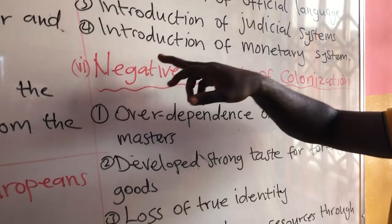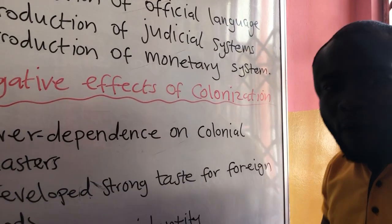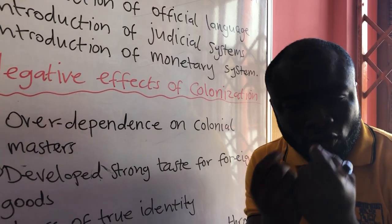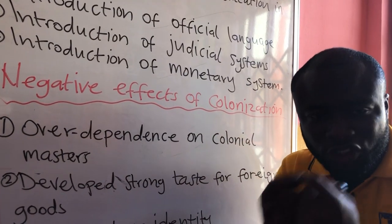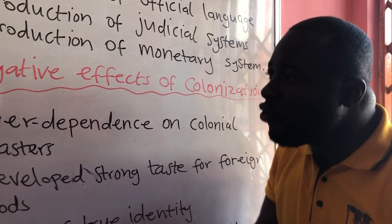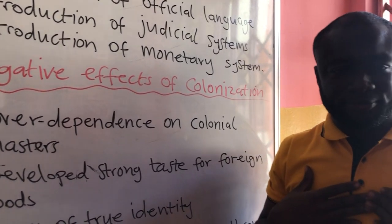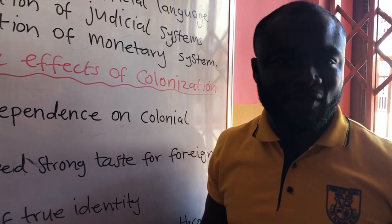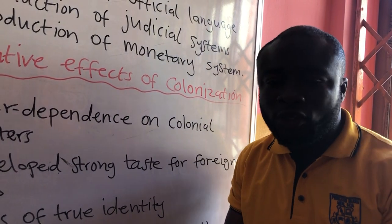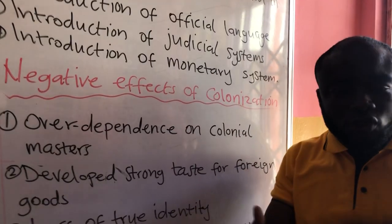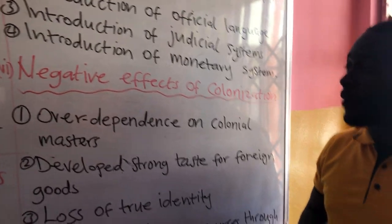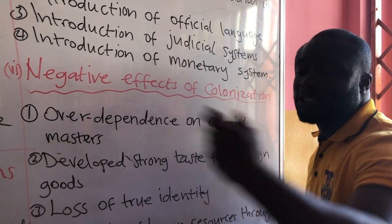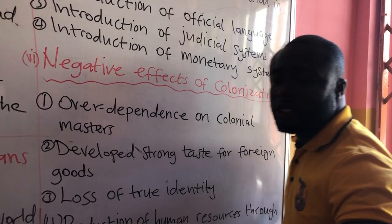The fourth positive effect was the introduction of the monetary system. Our people at that time had no knowledge about money. They were doing what is called barter trading — exchanging goods for goods. I give you banana and you give me cassava; I give you fish and you give me cassava — that was barter trading. They came to introduce money to us; we didn't know anything about money. We were dealing with goods for goods.